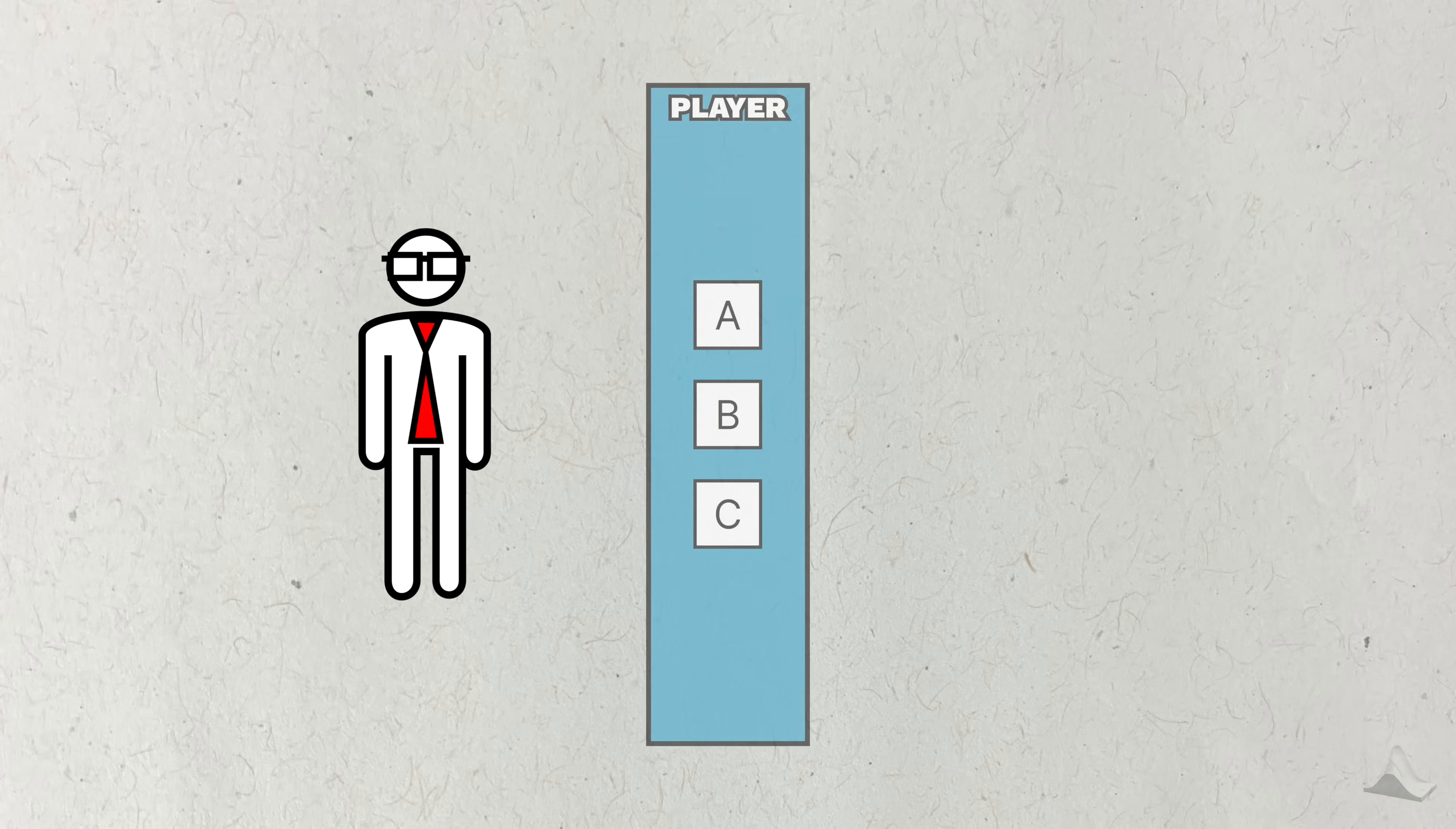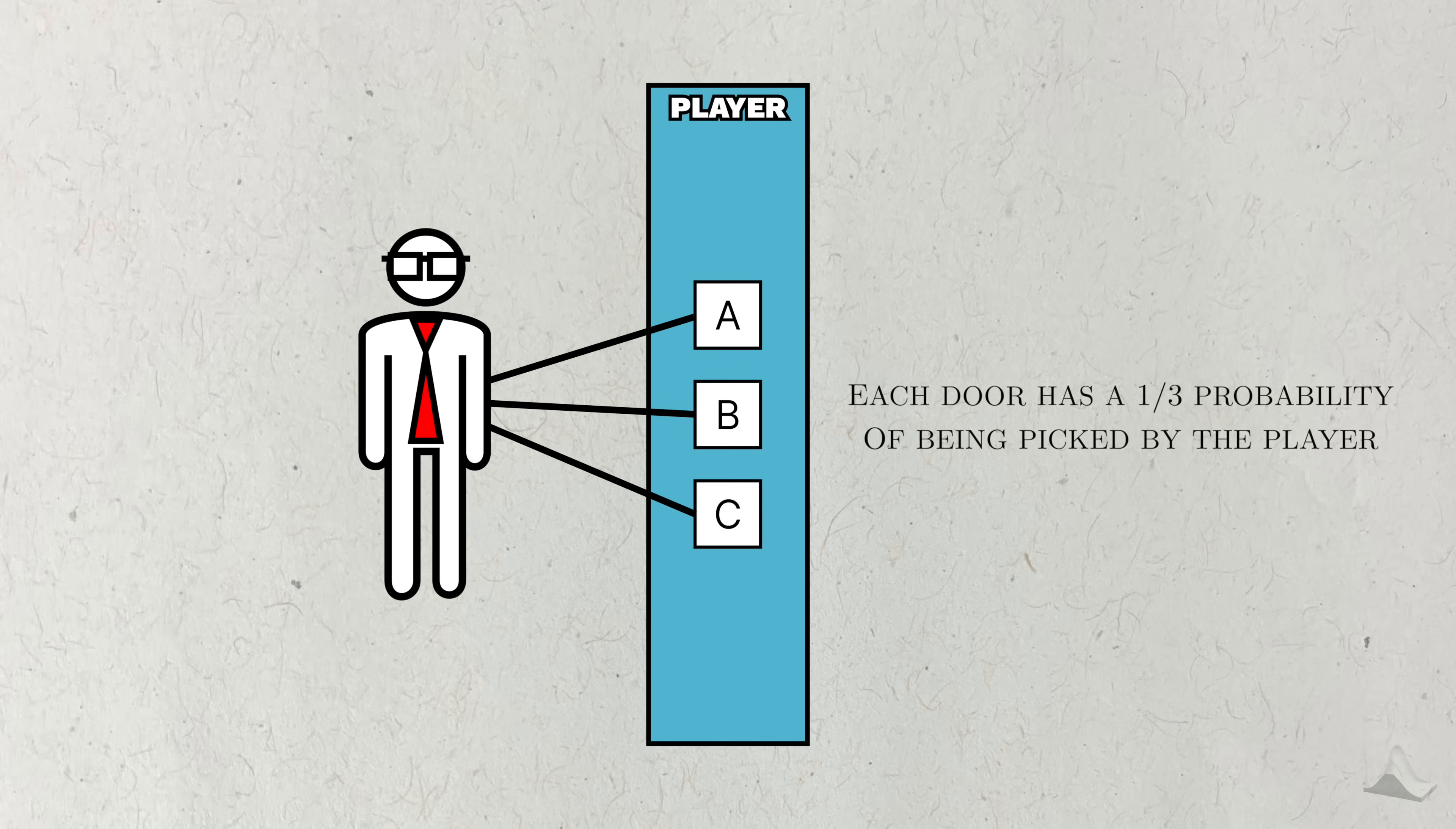You, the player, picks first. You don't have any reason to prefer one door over another, so it makes sense to pick one of the doors at random with equal probability. Three doors means that they all get a one-third probability of being selected.